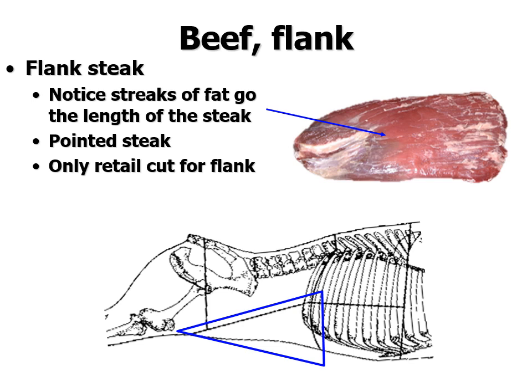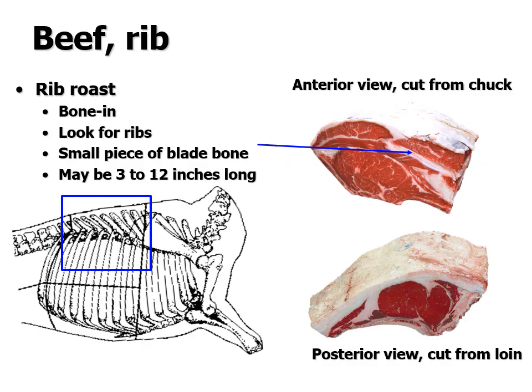The beef flank primal has only one cut: the flank steak. It looks a little like the skirt steak except it's pointed on one end and the streaks run the long direction. This cut sits on the outside of the carcass, so it can take temperature abuse during the harvest process, and you'll often see some discoloration in it. It's the only cut from the flank.